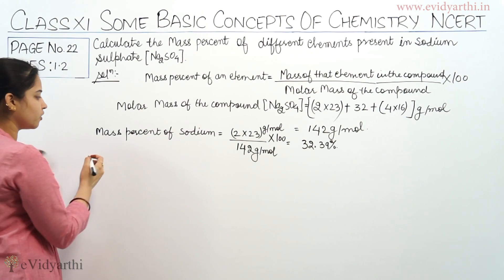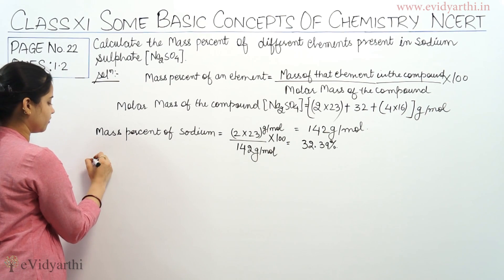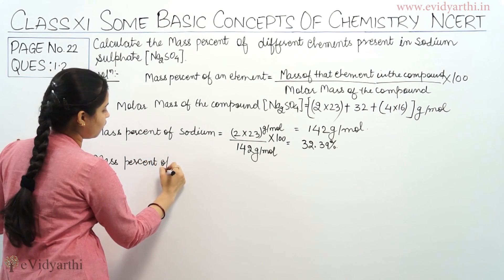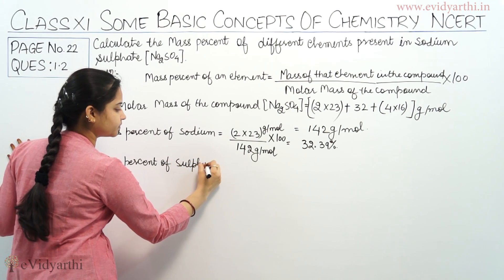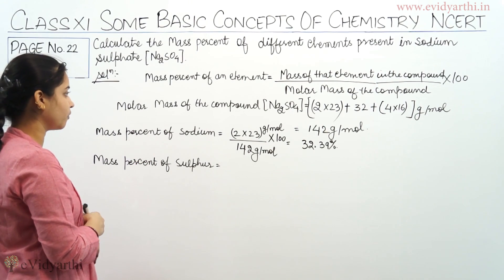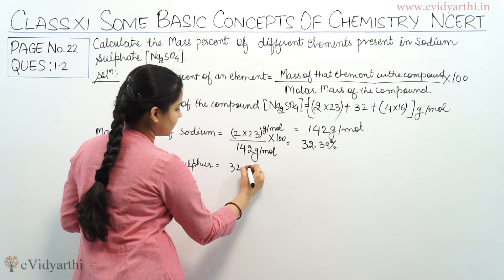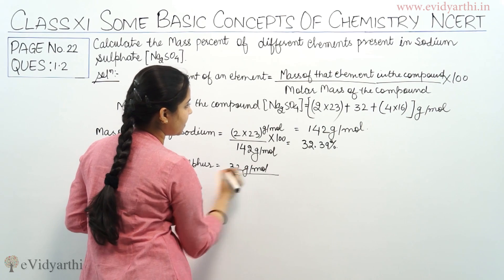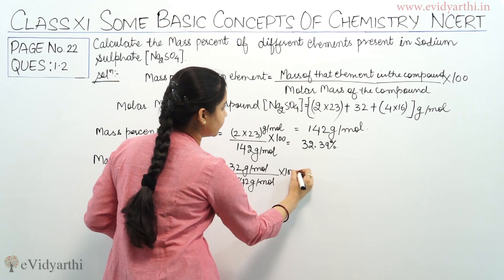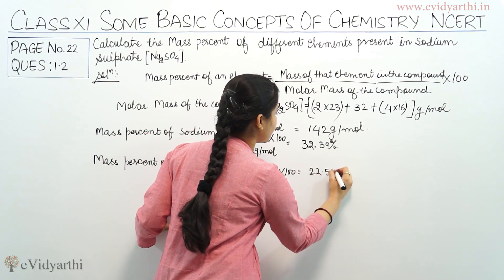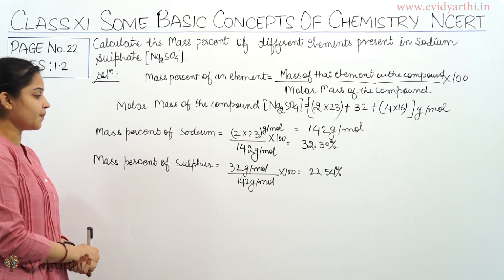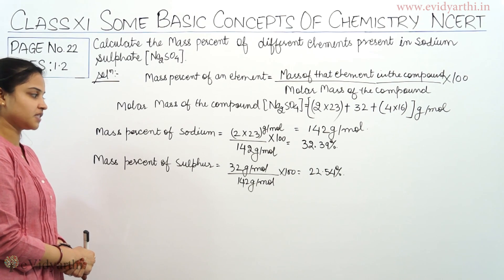Moving on to the second element, sulphur: calculate the mass percentage of sulphur. Only one atom of sulphur is present in this compound. So it will be 32 grams per mole divided by 142 grams per mole, multiplied by 100, and the answer is 22.54%. So the mass percentage of sulphur in sodium sulphate is 22.54%.